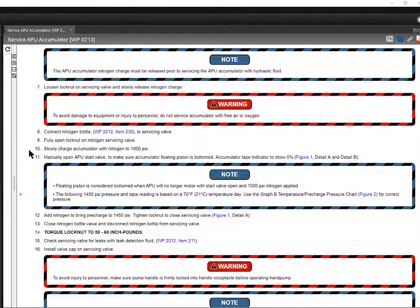Generally, you're going to start with 1000 PSI. But when you get to this note, the following 1450 PSI pressure on tape reading is based off of a 70 degree Fahrenheit temperature day. It says to use the graph B temperature pre-charge pressure chart for correct pressure. This is where ambient temperature is going to play a part in how much nitrogen needs to be in the accumulator.